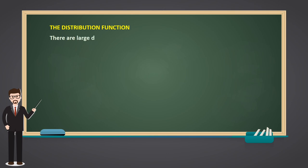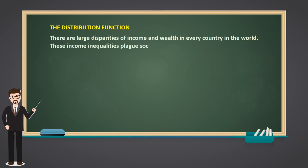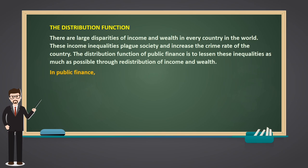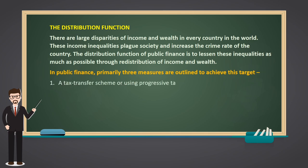The Distribution Function: there are large disparities of income and wealth in every country in the world. These income inequalities plague society and increase the crime rate of the country. The distribution function of public finance is to lessen these inequalities as much as possible through redistribution of income and wealth. In public finance, primarily three measures are outlined to achieve this target. First, a tax transfer scheme or using progressive taxing — charging higher tax from the rich and giving subsidies to the low income.